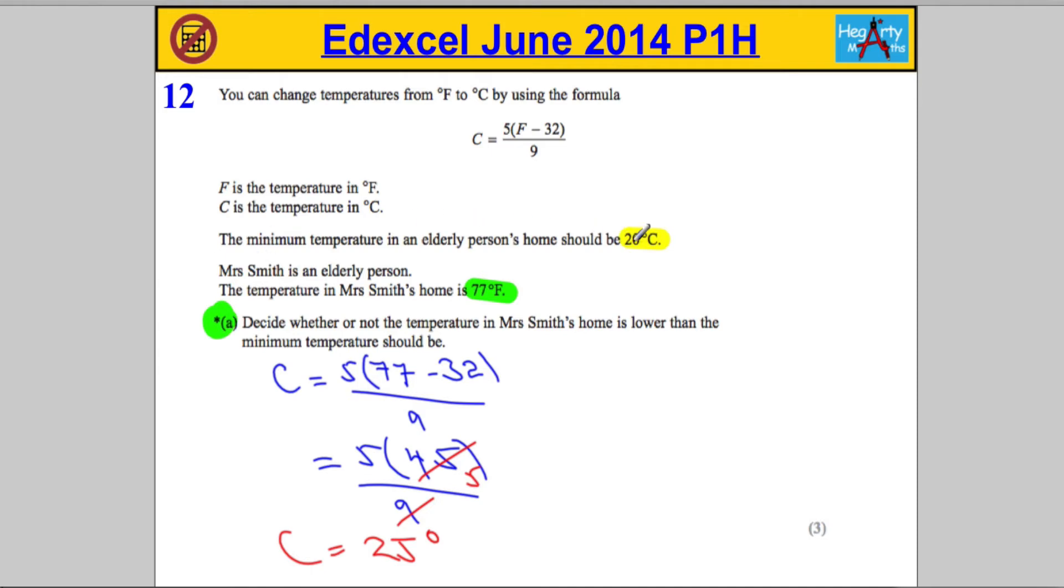The minimum temperature it needs to be is 20. Is it lower than the minimum temperature? So the answer to that question is no, it is 5 degrees above minimum. That should get us the full three marks there.